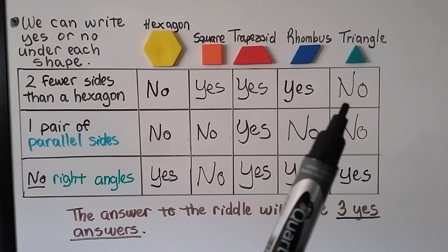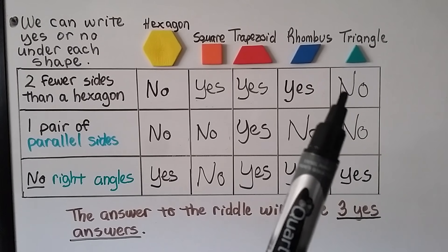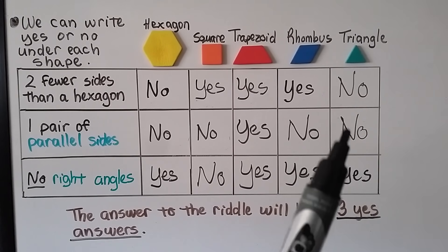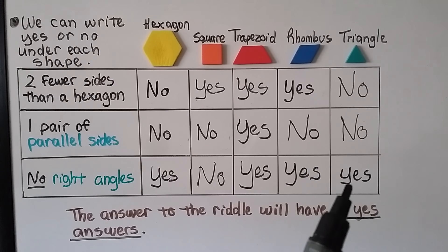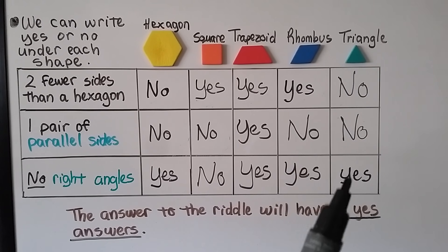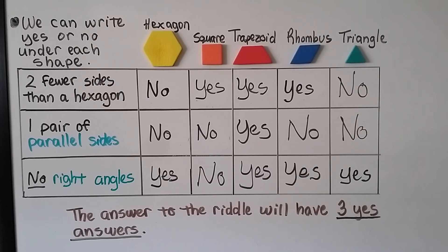And the triangle — does it have two fewer sides than a hexagon? A triangle has three sides, a hexagon has six — that's three fewer, not two — so no. One pair of parallel sides? No, triangles have no parallel sides. No right angles? Yes, there are no right angles. The answer to our riddle will have three yes answers, and that is a trapezoid — the shape that has two fewer sides than a hexagon, one pair of parallel sides, and no right angles.